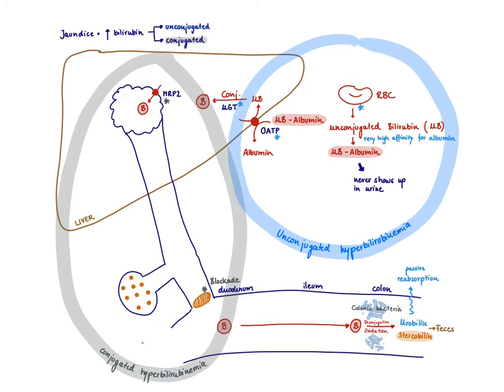Certainly also, you can have both unconjugated and conjugated hyperbilirubinemia. That's most common if you have just some sort of general liver damage. If you have liver damage and rip apart the hepatocytes, you're going to get both, too much unconjugated and too much conjugated bilirubin.